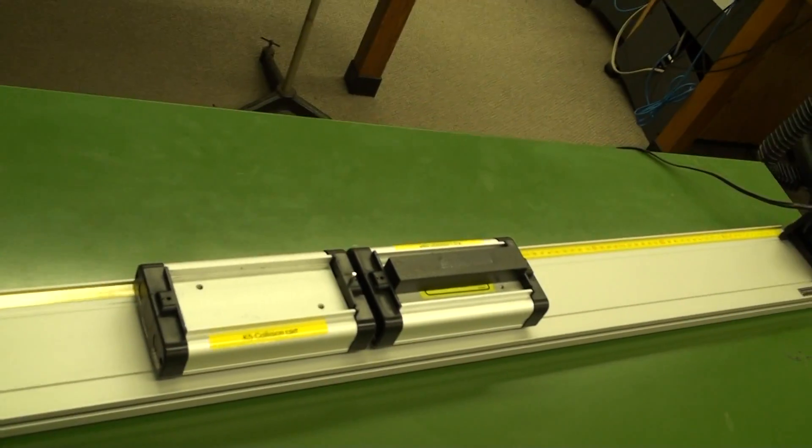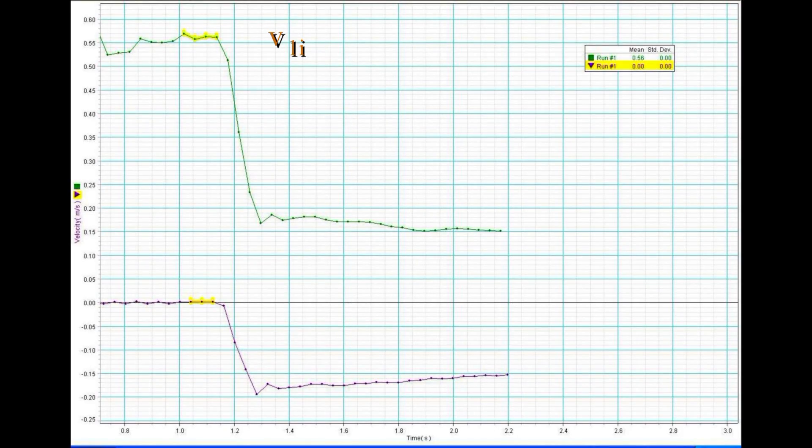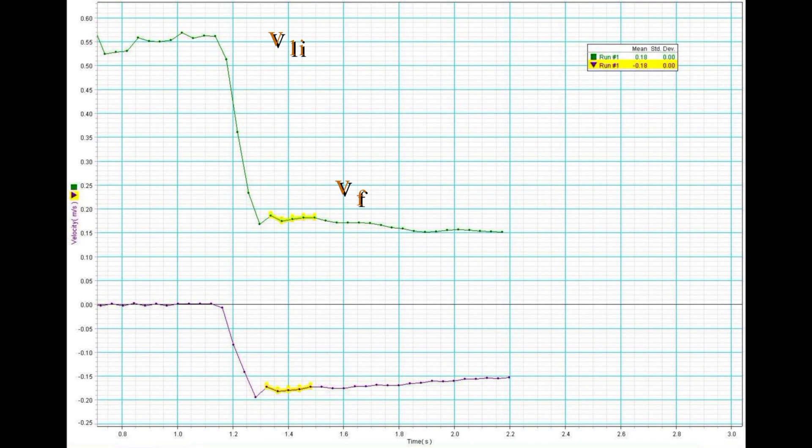And here is the collision. Record the velocity of cart 1 before the collision. Record the final velocity of the combination just after the collision.